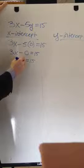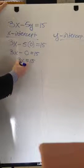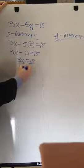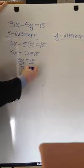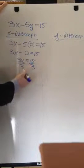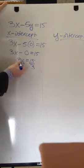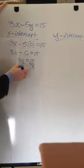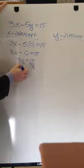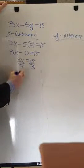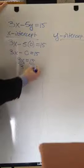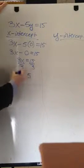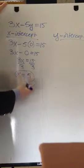3 times x is 15. x is getting multiplied by 3, and the opposite of multiplication is division, because I want to get x by itself. I divide by 3, which is the coefficient — the number multiplying x. 3 divided by 3 is 1, and 1 times x is just x. So x equals 15 divided by 3, which is 5. This is my x-intercept.